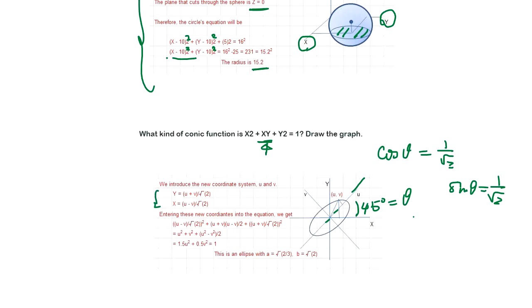So you see this equation here - we adapt a new coordinate u and v by rotating the coordinate. Then you get this. This is the ellipse. So this ellipse is tilted by 45 degrees - that's what this is.